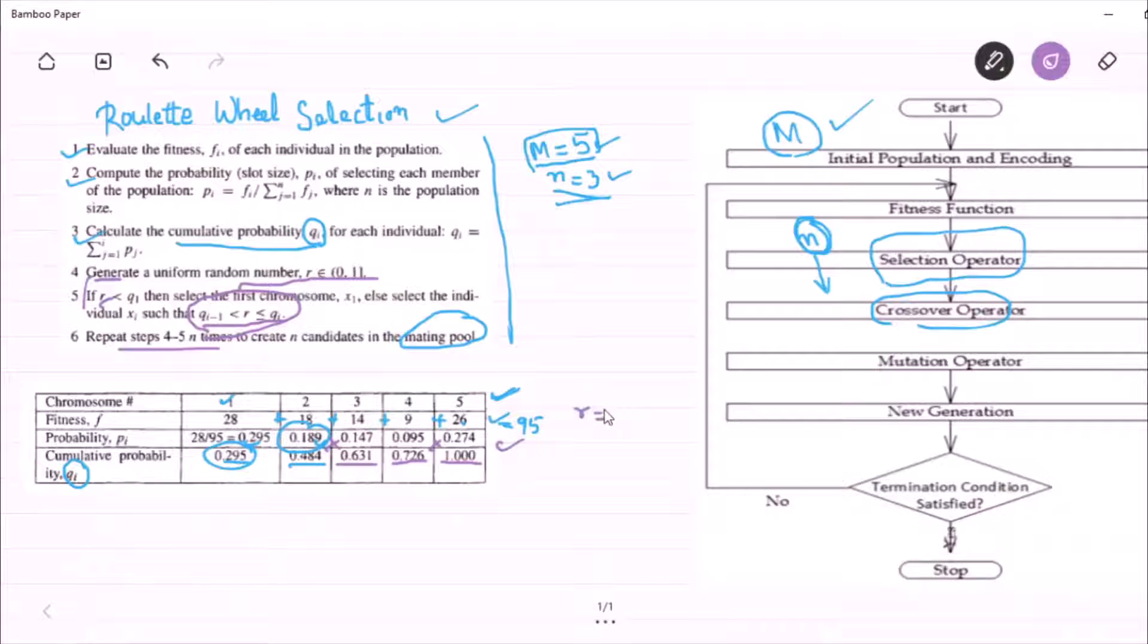So execute line number 4. If my random number is suppose 0.8, if it is 0.8, then it seems that 0.8 lies between 0.726 and 1. So this logic is satisfied. I mean this condition is satisfied.